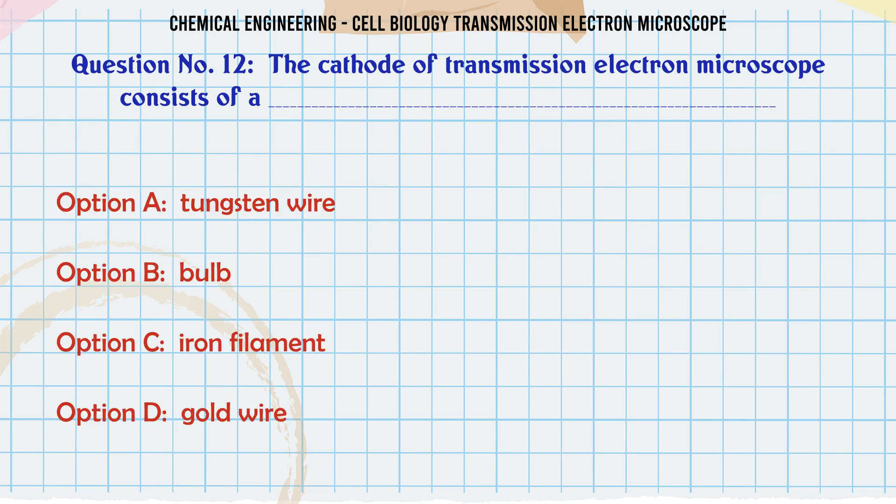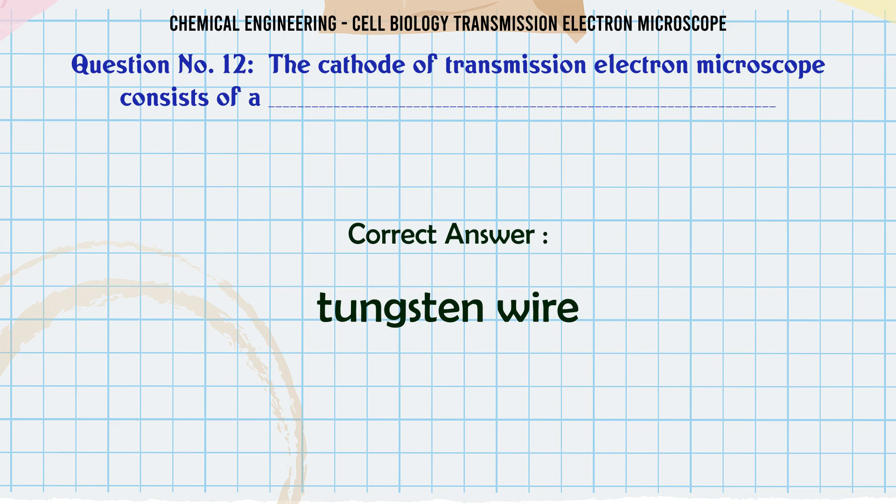Question 12: The cathode of transmission electron microscope consists of a: A. Tungsten wire, B. Bulb, C. Iron filament, D. Gold wire. The correct answer is tungsten wire.